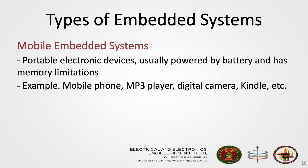And then there's the mobile embedded system, which includes portable electronic devices like mobile phones, MP3 players, digital cameras, Kindle, smart watches, and many more. These devices are usually powered by batteries and have memory limitations.